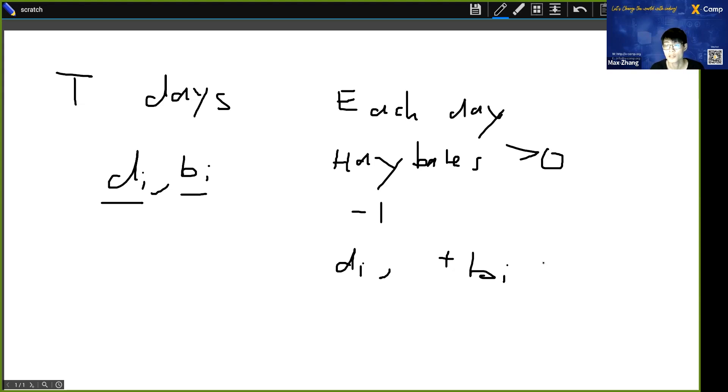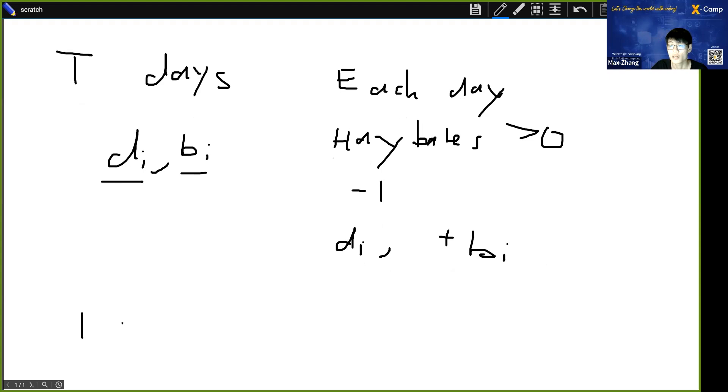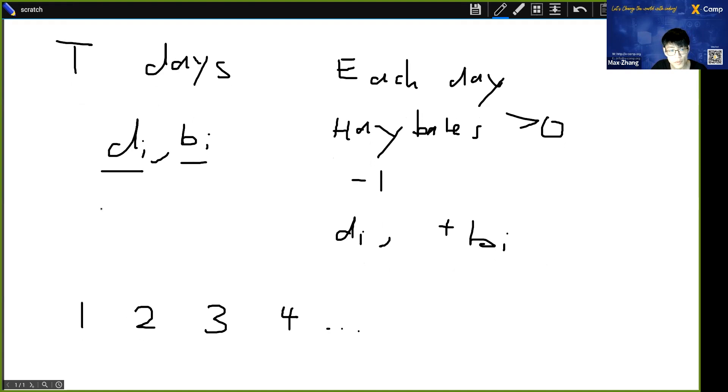So one idea is we could go through each day, right? Let's say we start with day one. If there are no hay bales, then Bessie doesn't eat a hay bale. Day two, day three, day four, we just go through every single day. And then let's say we reach, let's say there is an input. Let's do an example here. So one example we have is, let's say we have two inputs. There's one, two, meaning that on day one there are two hay bales added. And five, ten, meaning that on day five, ten hay bales are added.